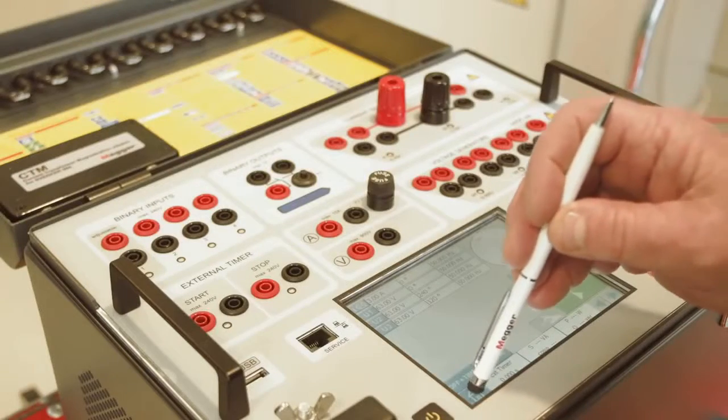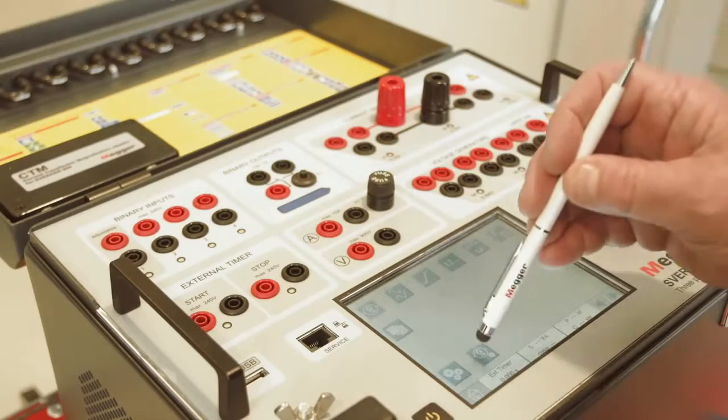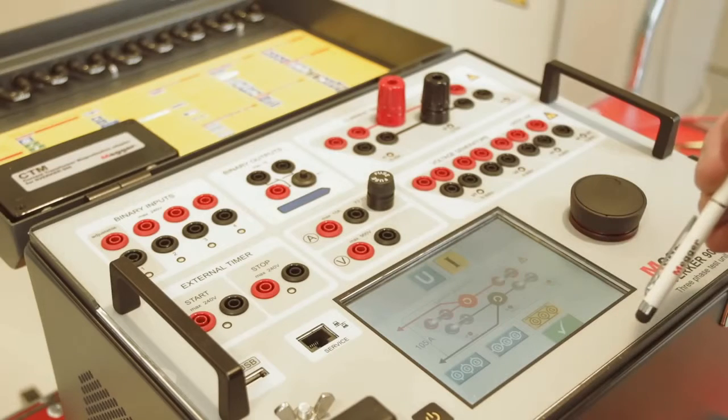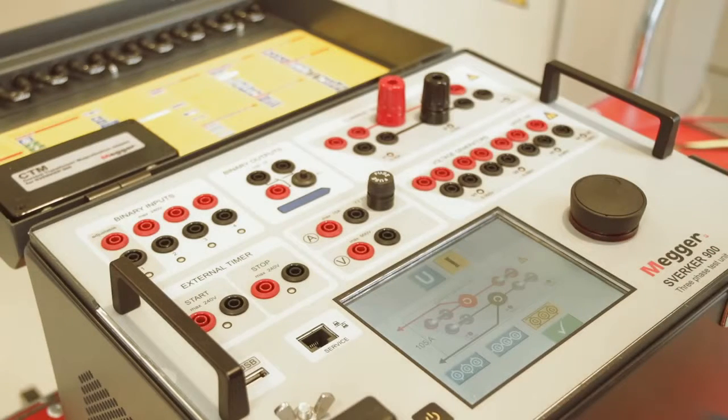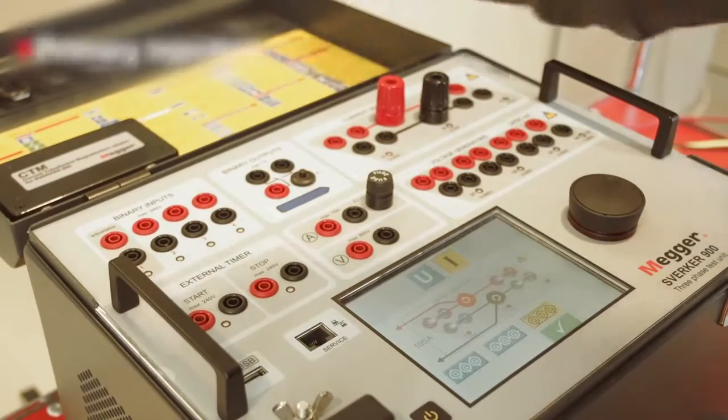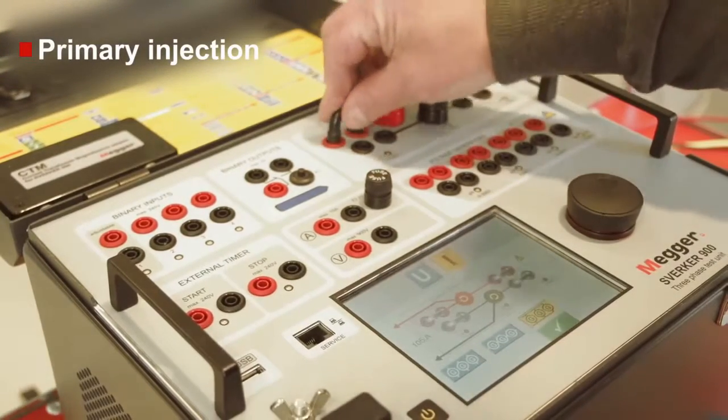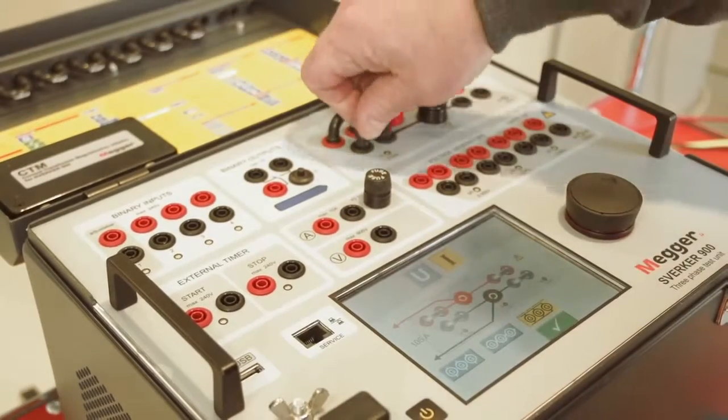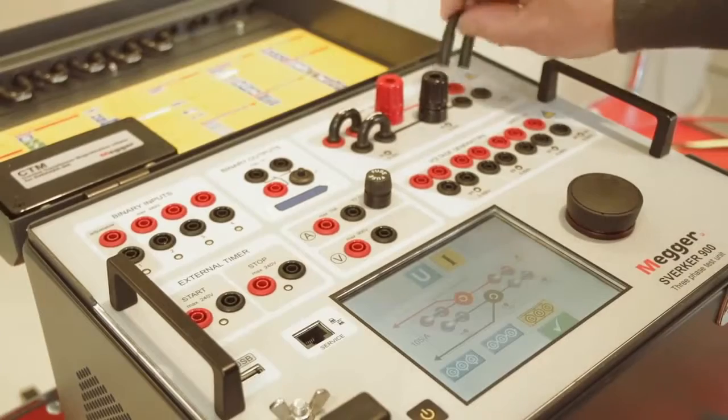Three currents and four voltage generators make the Sverker 900 a complete three-phase test system. It is also possible to switch to one-phase mode and reach the high amplitudes in current and voltage that are needed for primary injection. This switch is simply made with cleverly designed jumpers and a user interface that guides the user in making the connection.